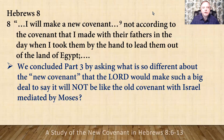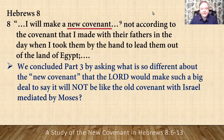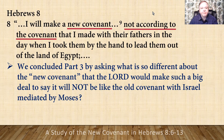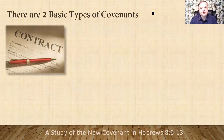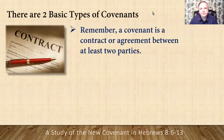We concluded part three by asking: what is so different about the New Covenant that the Lord would make such a big deal to say it will not be like the Old Covenant with Israel that was mediated by Moses? To understand the difference, we need to understand two basic types of covenants or agreements or contracts, because there are two basic types.